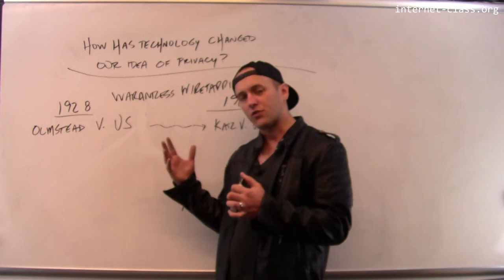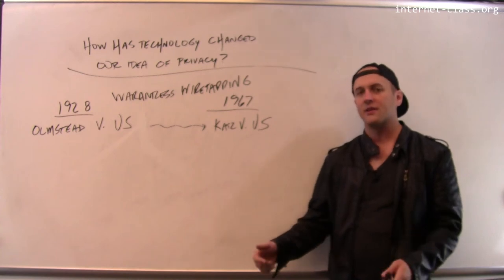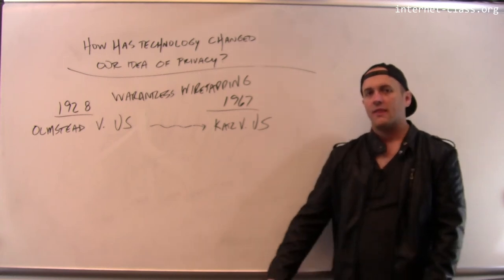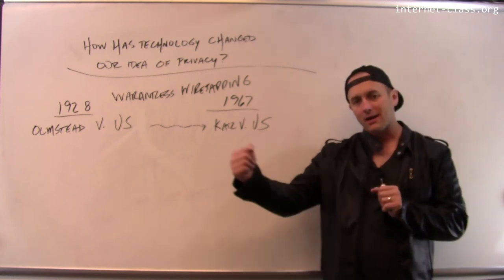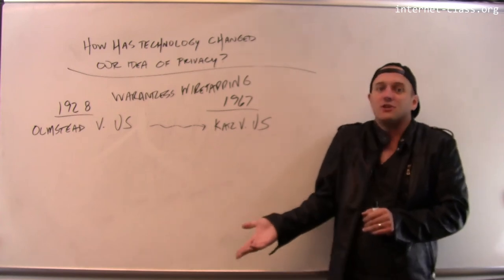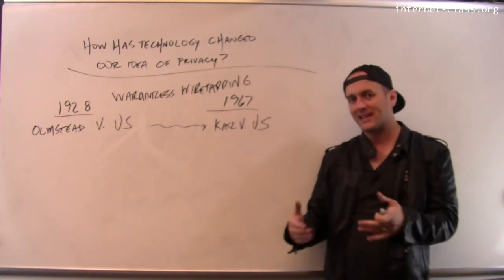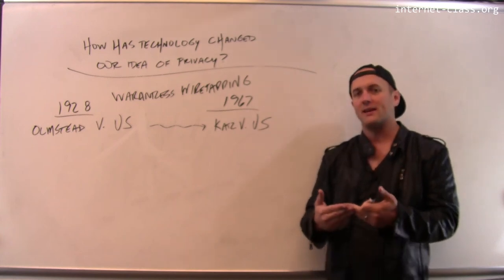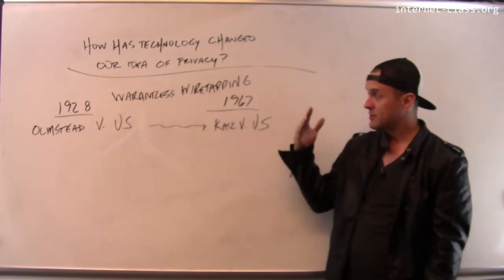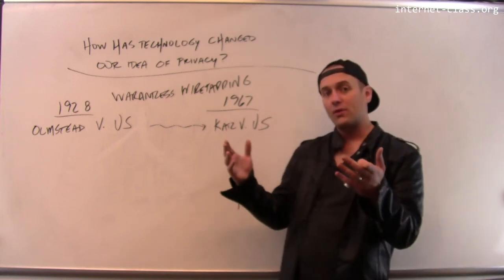When the Constitution was written, here's what an unreasonable search meant. You've probably seen this on television—the cops come to your house, they bang down the door, and they go through everything. They go through every drawer, pull up the carpet, look in the ceiling, they look everywhere. And with a warrant, to some degree, they can do that. Once they have probable cause, they can come into your house and look through all sorts of stuff. But that's what an unreasonable search meant in the 1700s.